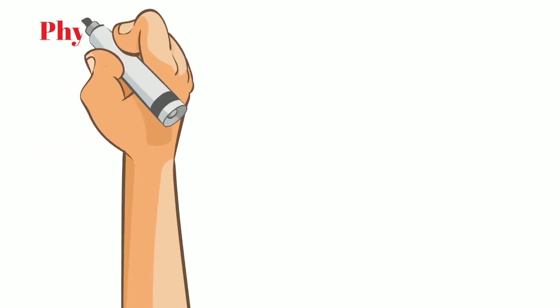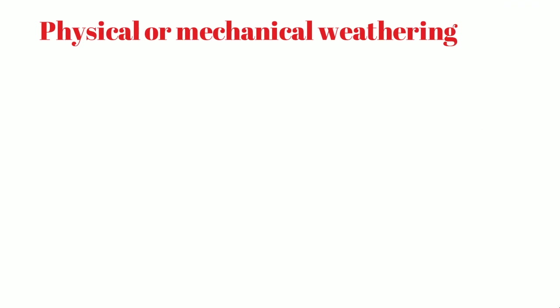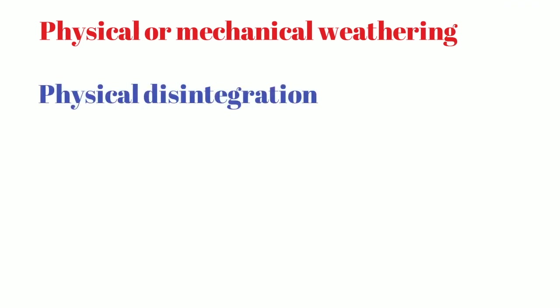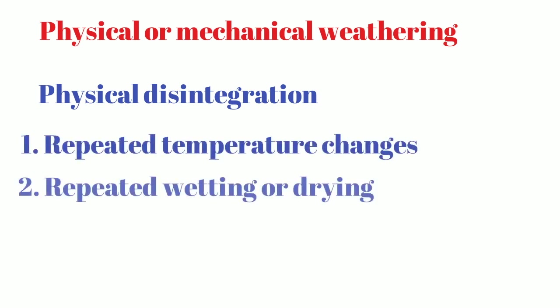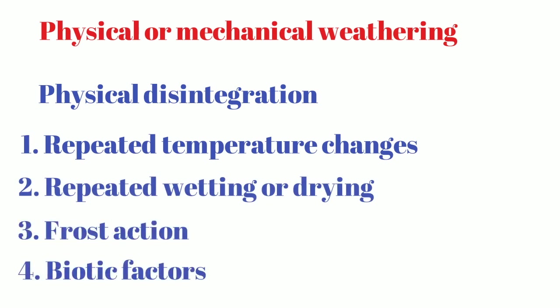Now we will talk about physical and mechanical weathering, which is the physical disintegration of rocks without chemical change. Physical weathering happens in many ways such as repeated temperature changes, repeated wetting and drying, frost action, and biotic factors.